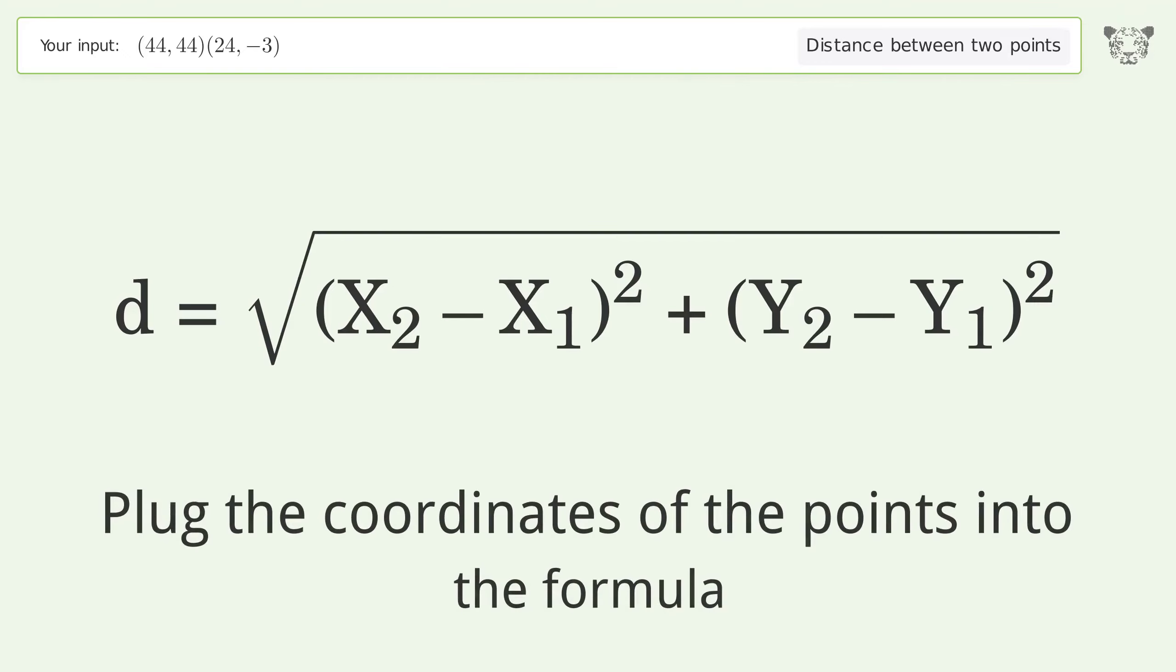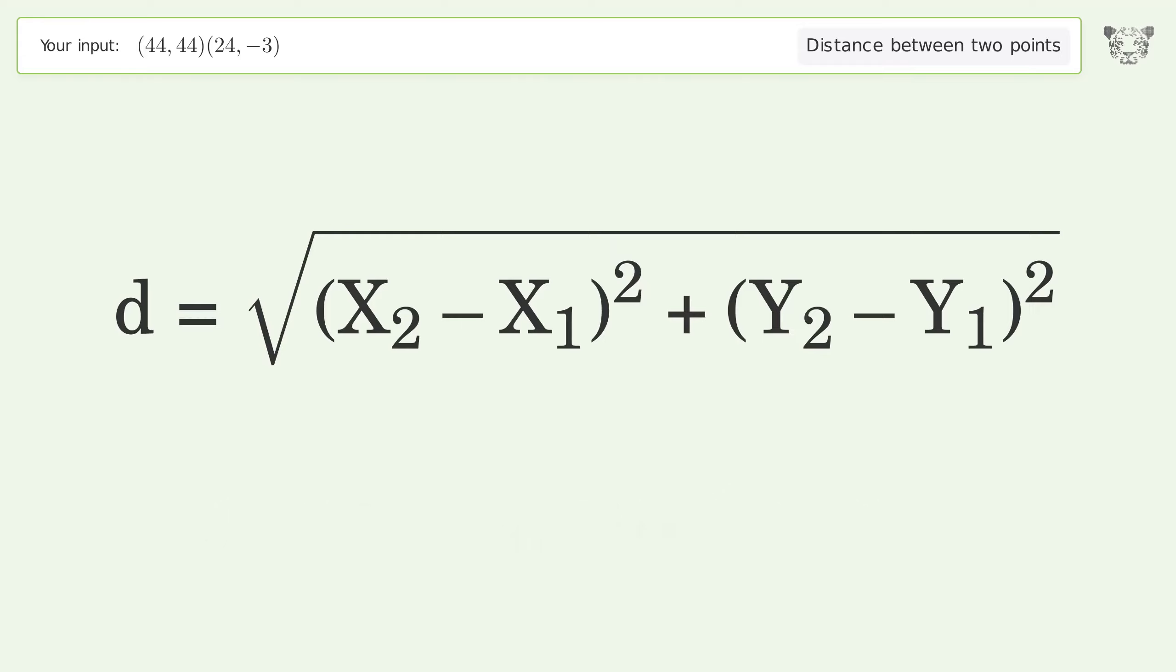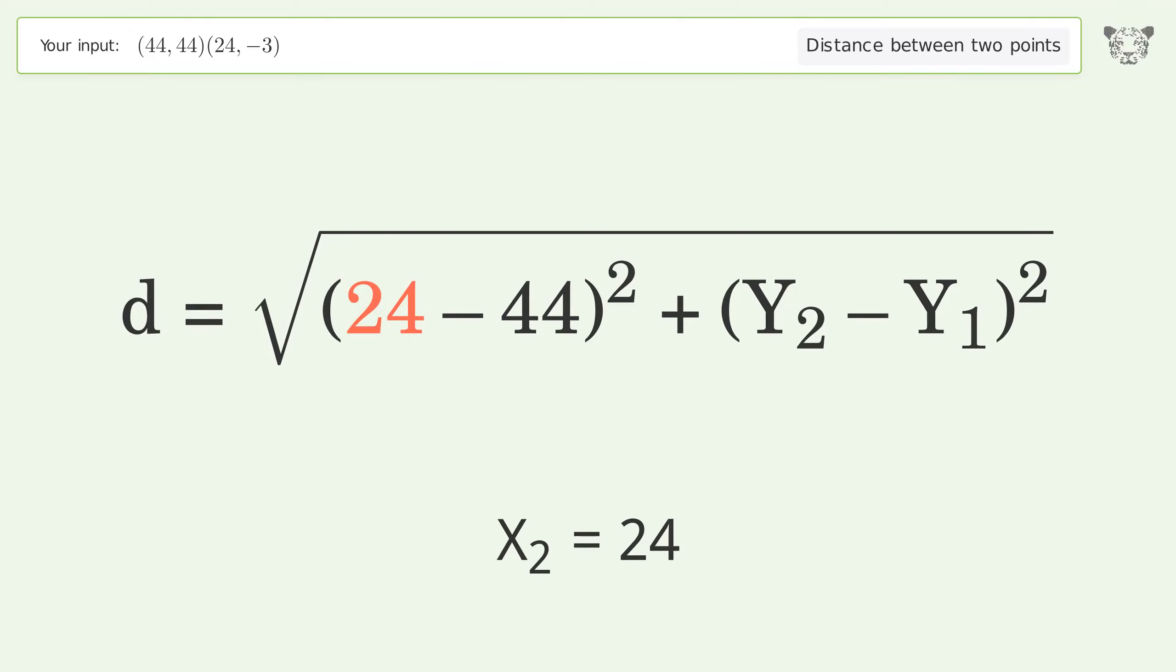Plug the coordinates of the points into the formula. x1 equals 44, x2 equals 24, y1 equals 44, y2 equals negative 3.